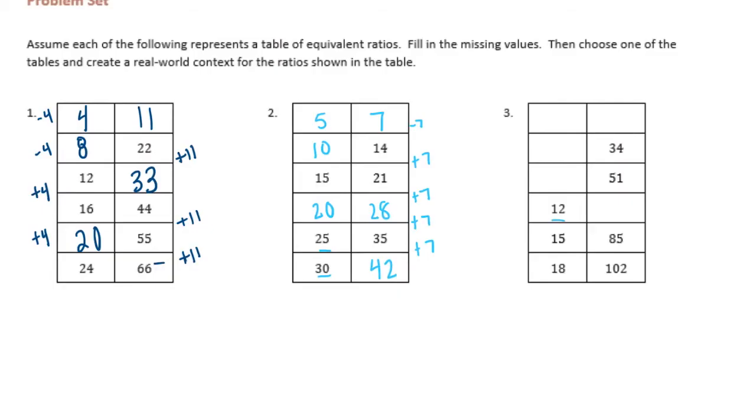And then the last one, let's see, 12, 15, 18. So that's adding 3 each time. So I'm just going to subtract 3, going the opposite direction.